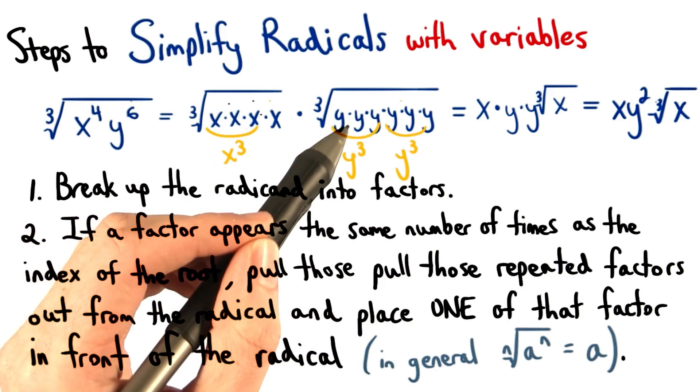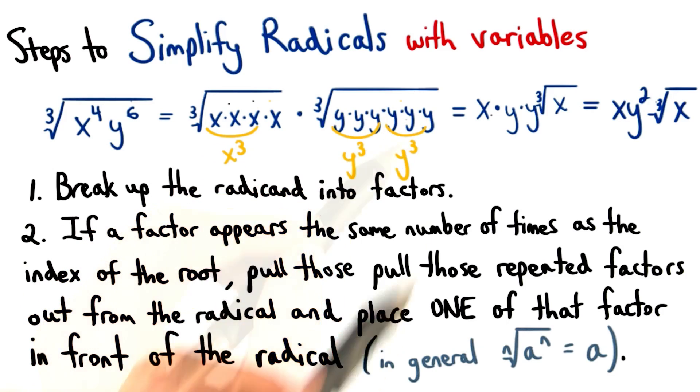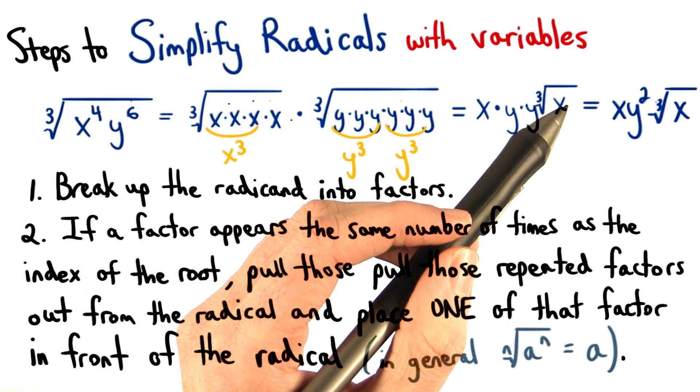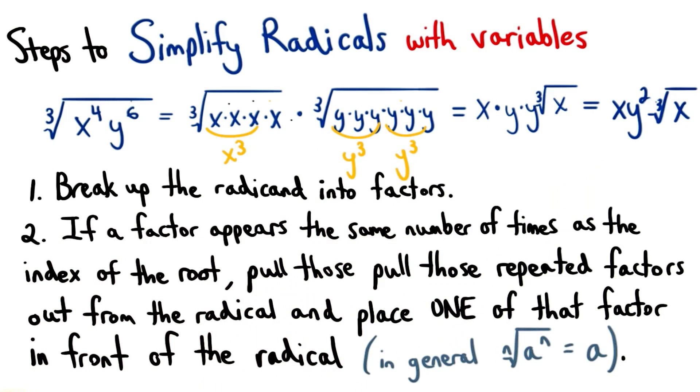That was why we could pull out one x, one y, and one y. We multiply all those factors together and leave any single or lonely factors inside of the radical. This will give us our final answer.